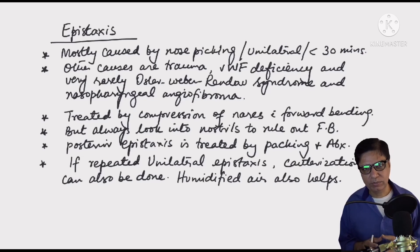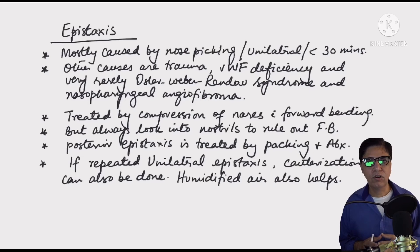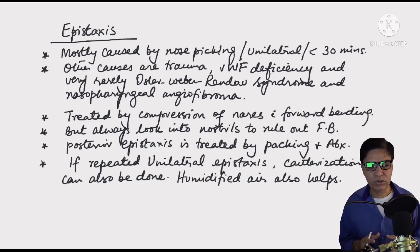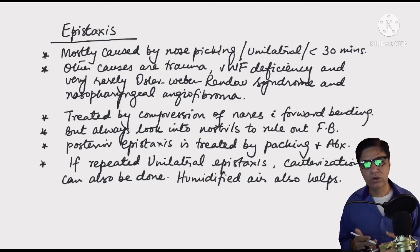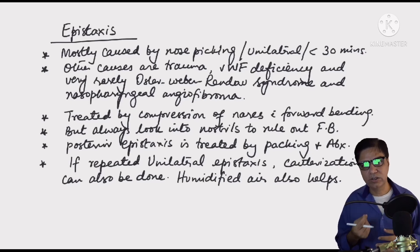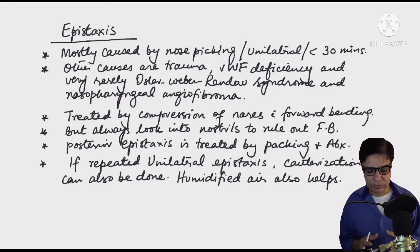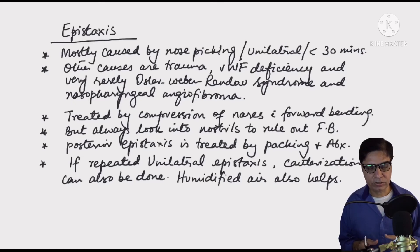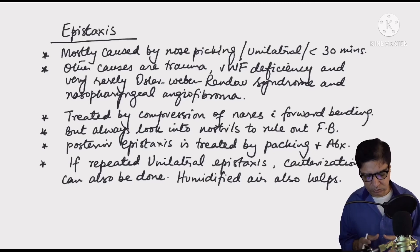Most of the time epistaxis is caused by finger picking or digital trauma. If it is recurrent or associated with other symptoms, a workup is needed — check clotting profile, platelet count, von Willebrand assay — and you may need a CT of the sinuses or nasal endoscopy to rule out a nasopharyngeal growth. Always examine the nose to check for a foreign body, which can also damage the nasal epithelium and cause epistaxis.